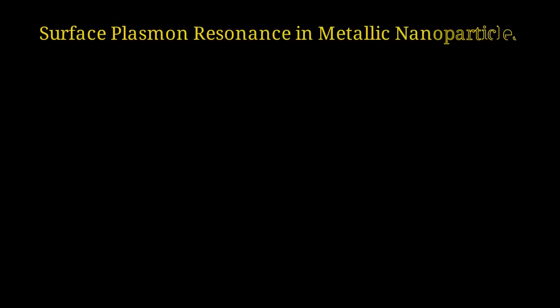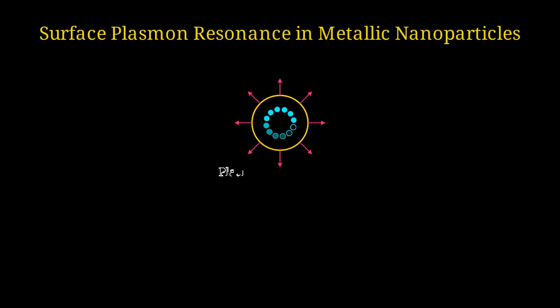Welcome to an exploration of one of nature's most fascinating quantum phenomena: surface plasmon resonance in metallic nanoparticles. Surface plasmons are collective oscillations of conduction electrons in metallic nanoparticles that create brilliant optical effects. This is why gold nanoparticles can appear red or purple instead of their familiar golden color.